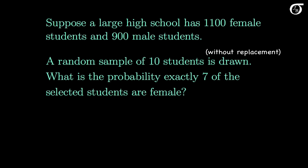What if we had ignored the fact that the sampling was done without replacement and used the binomial distribution instead? If we simply said the probability of getting a female student on any given trial is 1,100 over 2,000, or 0.55, and ignored the fact that it changes from trial to trial, and put this into the binomial formula, we would get 0.166478. But since the sampling was done without replacement, that is not the correct probability. The correct probability from the hypergeometric distribution was 0.166490. These two probabilities are actually pretty close.